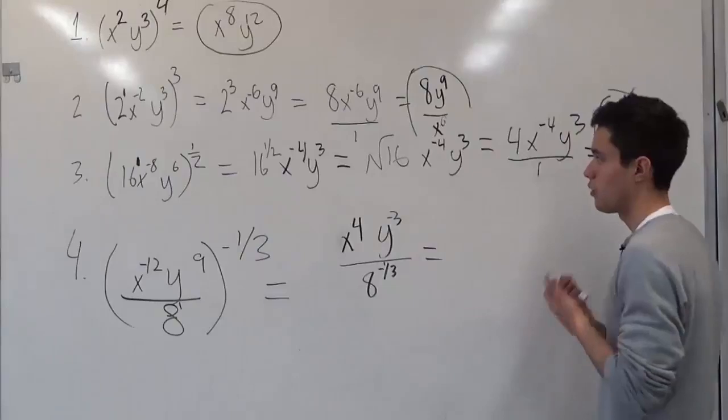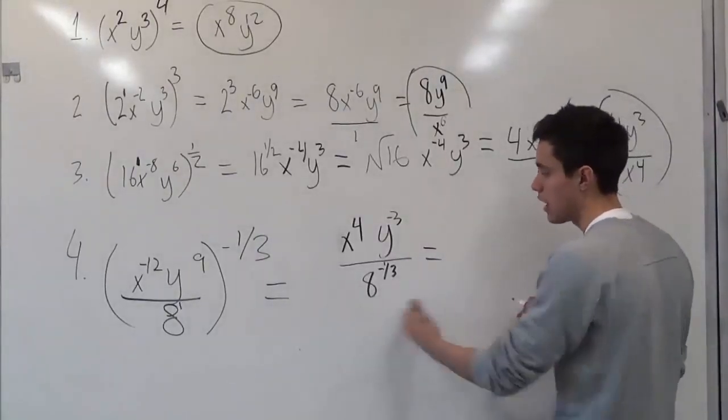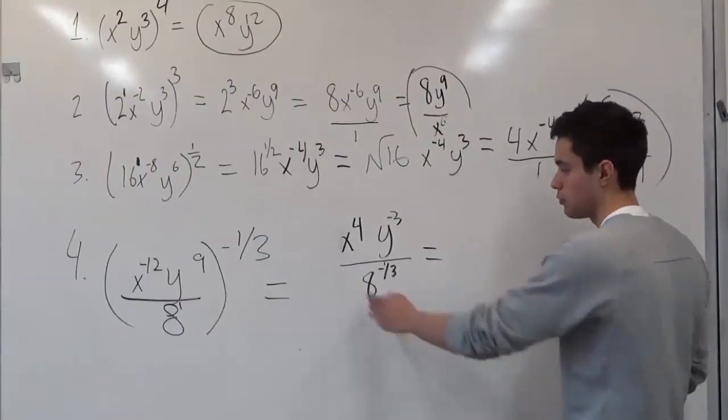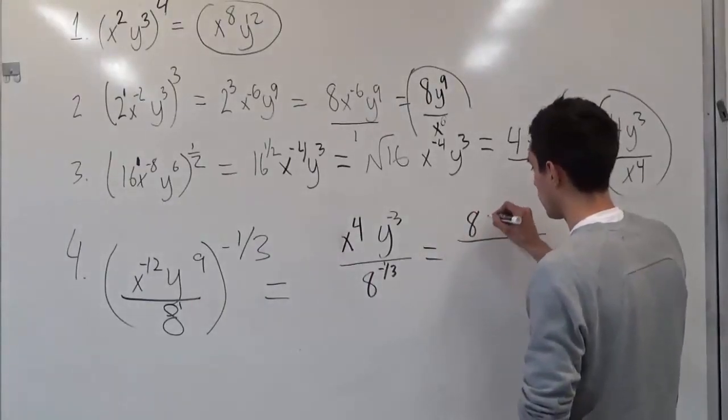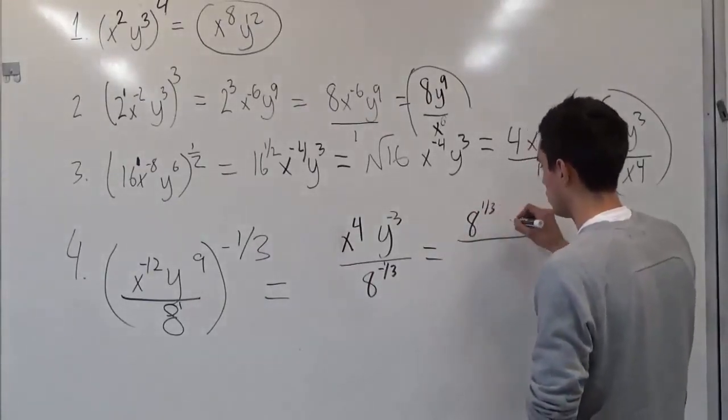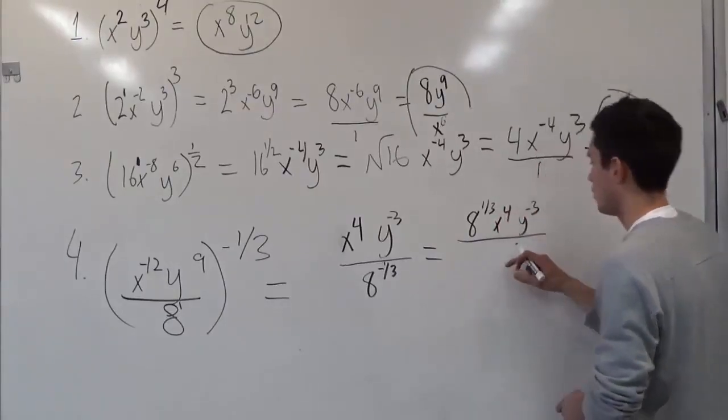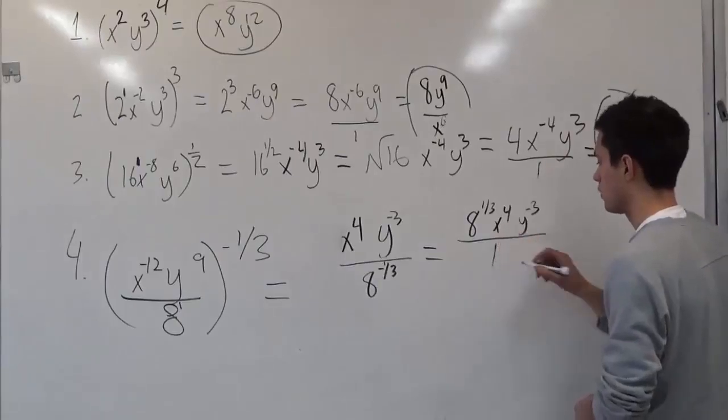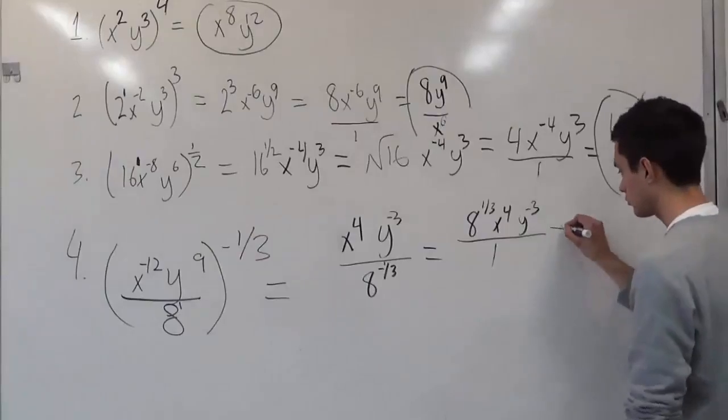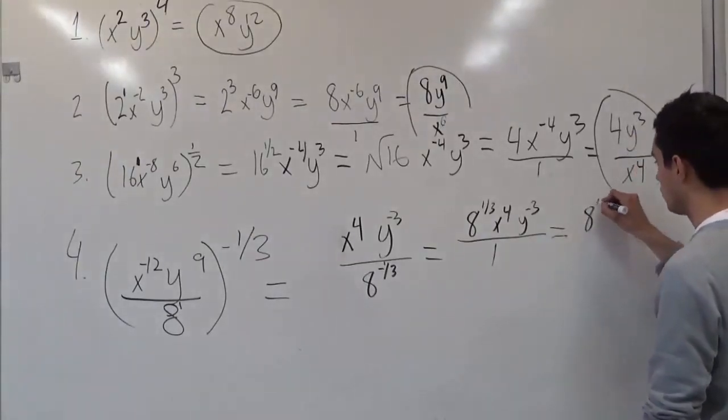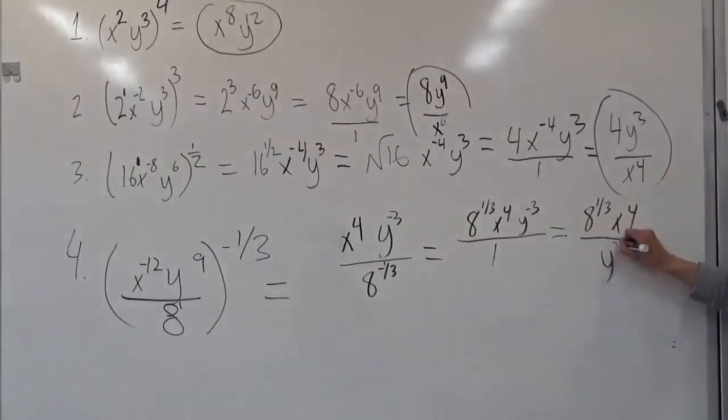So as we said before with our rules, when we have a negative exponent, we always want to convert it to be positive. So in order to do that, let's bring it up top. So we have 8 to the 1 third, x to the fourth, y to the negative 3. So now, we have to bring this one, since it's negative, to the bottom. So 8 to the 1 third, x to the fourth, over y to the third.